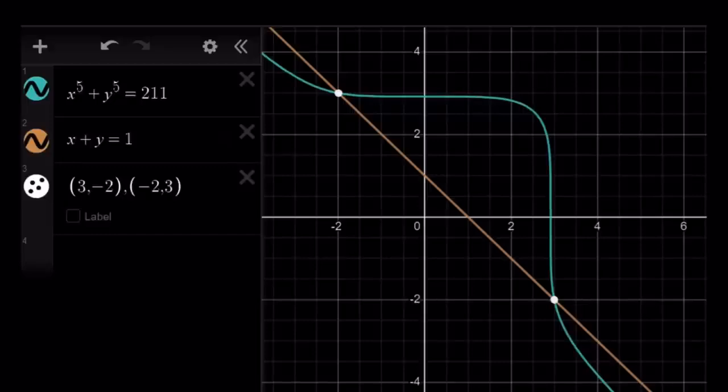But anyways, you get the idea. They only intersect at two points. And those are going to give you the x and y values.